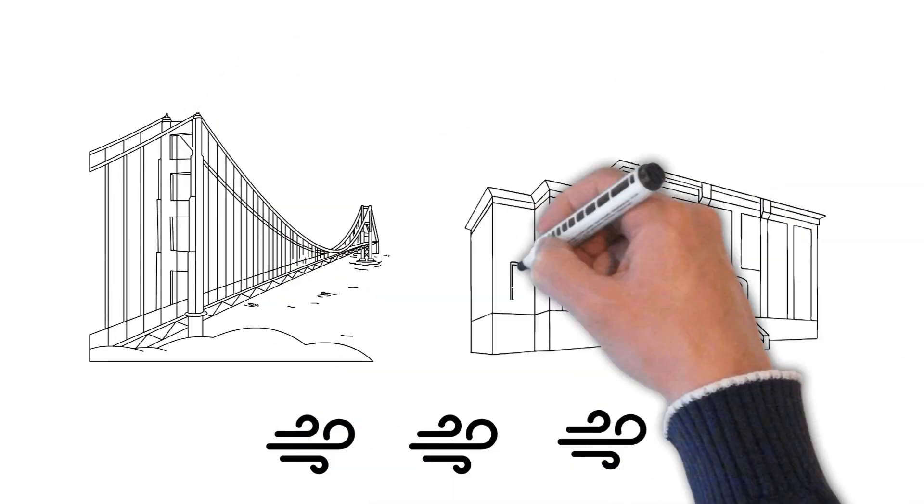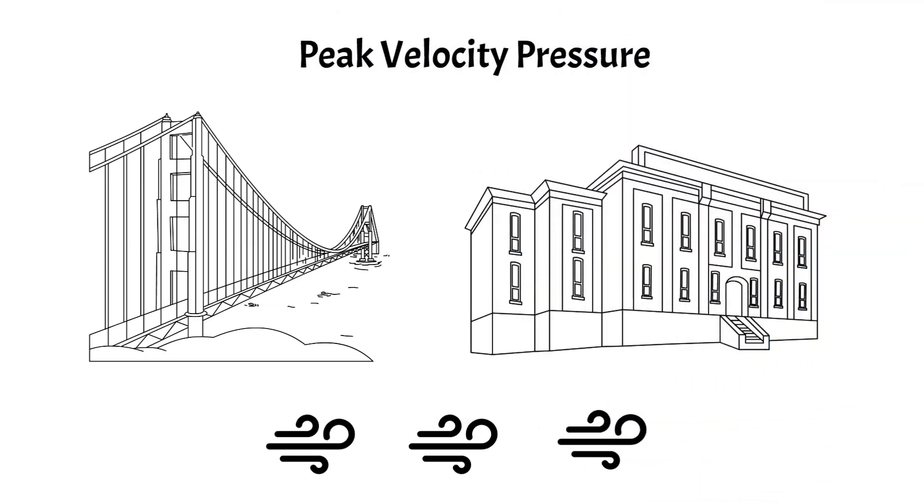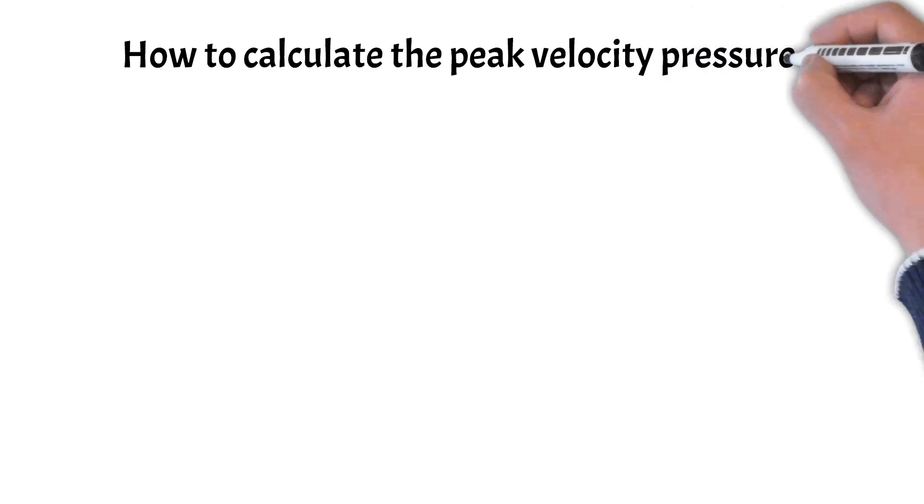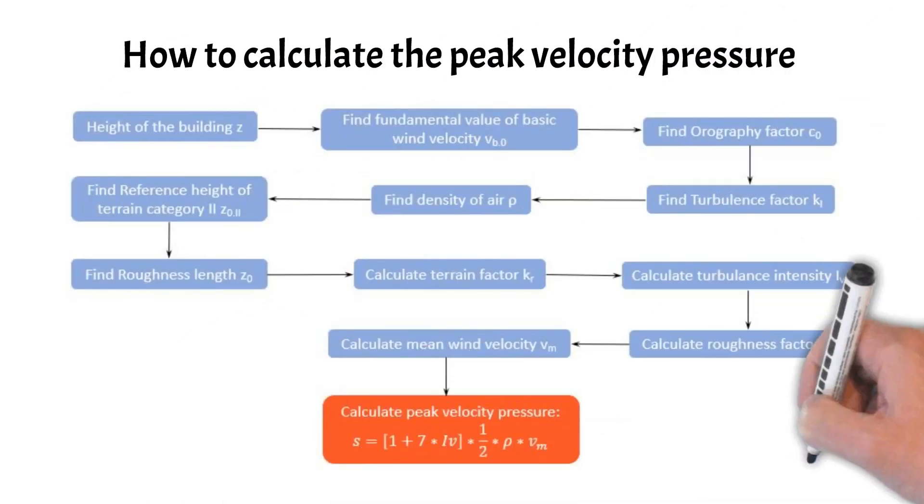When you're calculating the wind loads on a structure like a bridge or building, you come across the peak velocity pressure. This pressure includes many parameters about the location, height, surrounding obstacles, and more. In this video we'll show how to calculate the peak velocity pressure step by step.